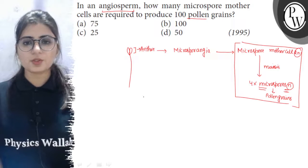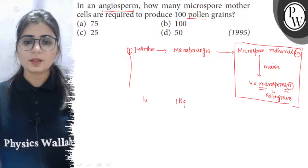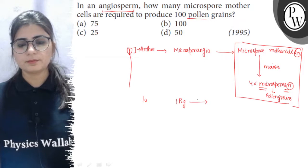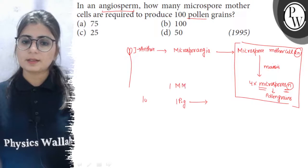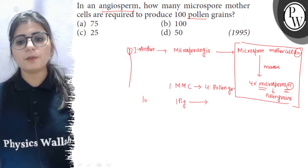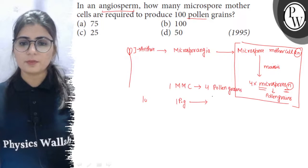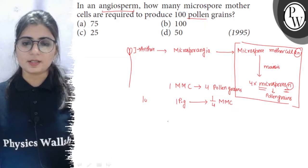So, by unitary method we can solve it that one MMC produces four pollen grains. So, one pollen grain will be formed from one by four MMC and we have to produce how many pollen grains? 100.